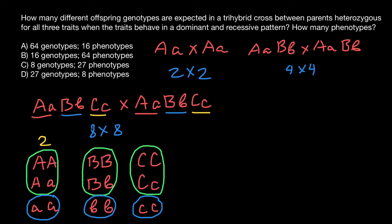We put the number two on top. How many different phenotypes do we have for gene B? Again, only two variants of phenotype. And similarly two for gene C. Now we multiply all these variants: 2 × 2 × 2, and we get eight distinctive phenotypes possible in a progeny.